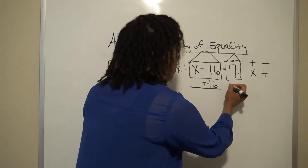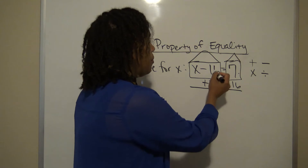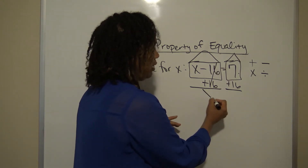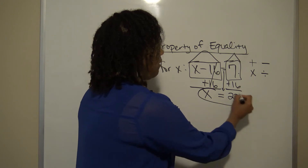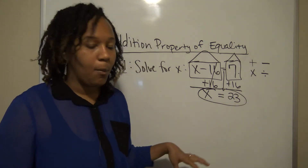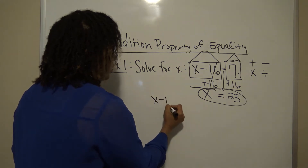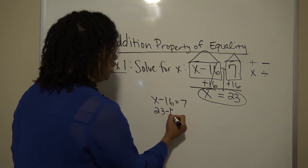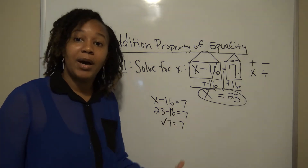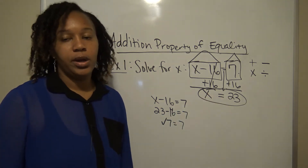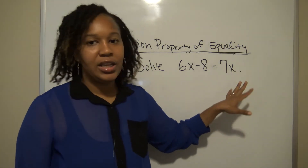That leaves me with x on the left side. Bringing down the equal sign, 7 + 16 = 23, so x = 23. I've gotten home alone — the goal. Let's check: the original equation was x - 16 = 7. Plugging in 23: 23 - 16 = 7, and 7 = 7. That checks out, confirming x = 23 is correct. That's how you solve this equation using the addition principle.